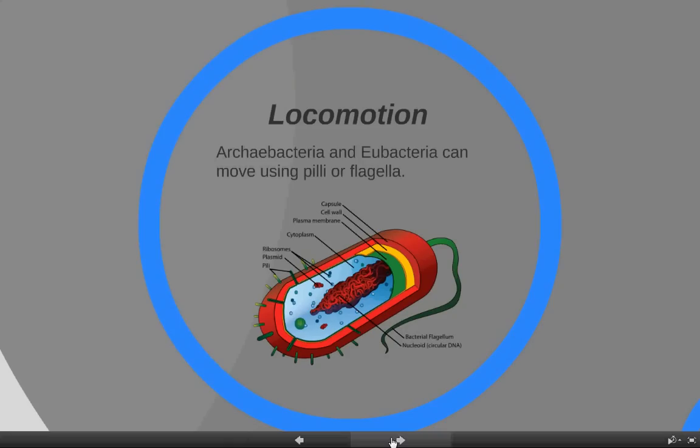For locomotion, archaeobacteria and Eubacteria both move using Pili or Flagella. The picture shown here is a typical bacterium where you can see the Flagellum pointed out on the side. Pili are just smaller versions.